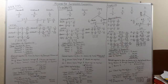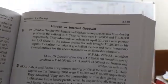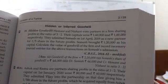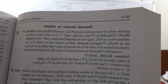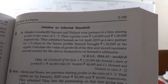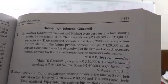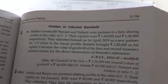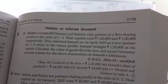The sacrificing partners' capital accounts will be credited in their sacrificing ratio. See question number 39, page number 3.139. The question says Hemant and Nishant were partners in a firm sharing profits in the ratio of 3:2. Their capitals were Rs 1,60,000 and Rs 1,00,000 respectively. They admitted Somesh on 1st April 2019 as a new partner for one-fifth share in future profits. Somesh brought Rs 1,20,000 as his capital. Calculate the value of goodwill and record the necessary journal entries.